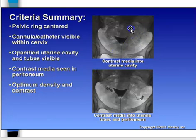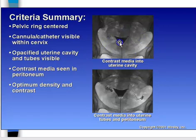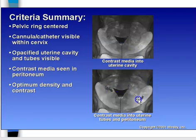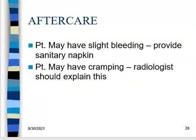Criteria: the pelvic ring is centered, we can see the cannula, the uterine cavity is filled with contrast and clearly outlined, and we can see contrast flowing out into the peritoneal cavity with good density and contrast. For aftercare, the patient may bleed a little — provide a sanitary napkin. There may be some cramping, because anytime you're manipulating the cervix it can cause cramping.